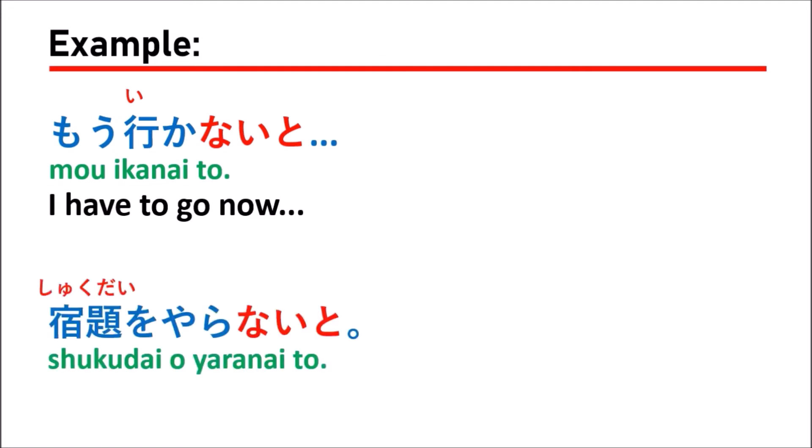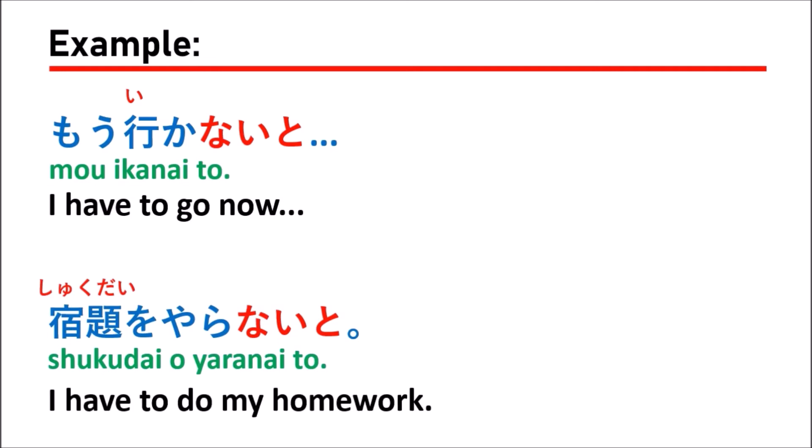The next example: shukudai wo yaranai to — which means 'I have to do my homework'. That means if you don't do your homework, you will have a problem with your teacher at school. So yaranai to in Japanese means 'I have to do my homework'.